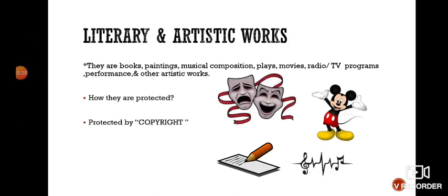Literary and artistic works include books, paintings, musical compositions, plays, movies, radio and TV programs, performances, and other artistic works. They are protected by copyright. For example, if someone is using your music and composition, they are using your intellectual property. If he or she takes your permission or pays you royalty for using your musical composition, then it is okay.